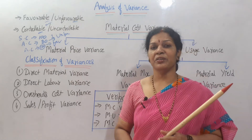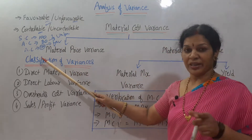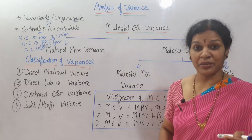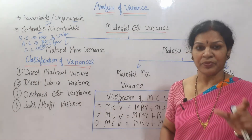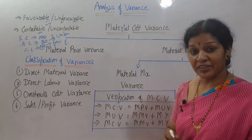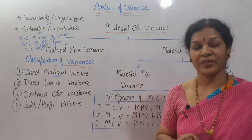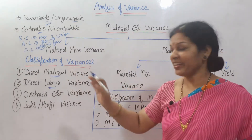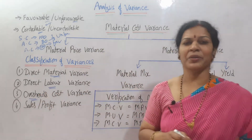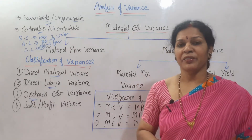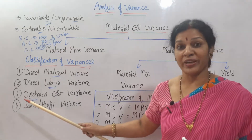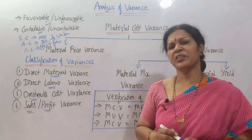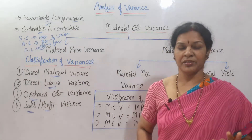Variance analysis has different kinds — four types in total, which is the classification of variances. The first is direct material variance, where we can control costs significantly. The second is direct labor variance, as labor can also be controlled. Third is overhead cost variance — overheads being extra expenses incurred until the product reaches the customer. Fourth and lastly is sales variance or profit variance.